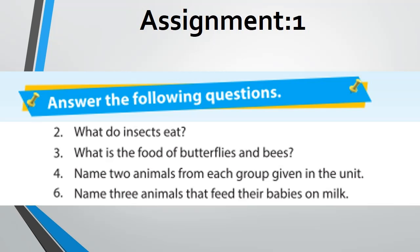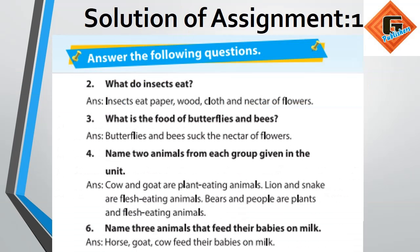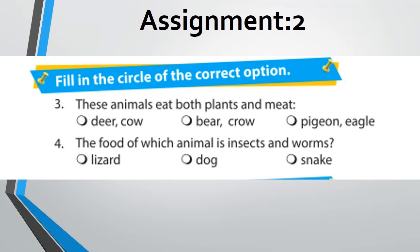Assignment number 2: fill in the circle of the correct option — fill the circle of the correct option. You can use the book for this. First question: these animals eat both plants and meat. Options are: first option — deer and cow; second option — bear and crow; third option — pigeon and eagle. Next question: the food of which animal is insects and worms?